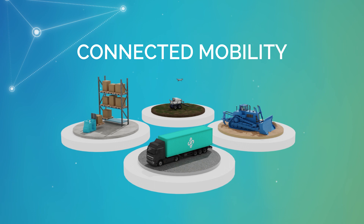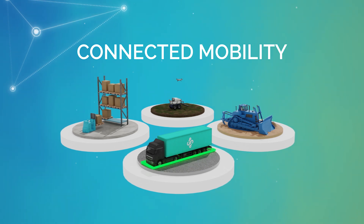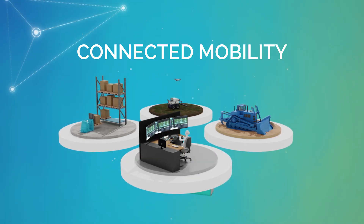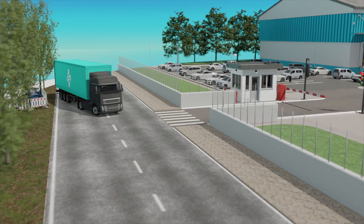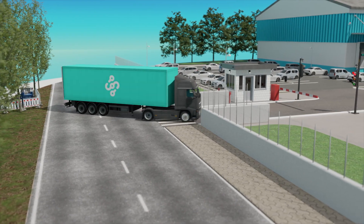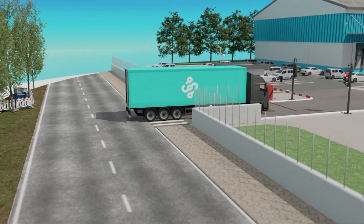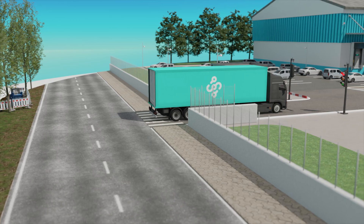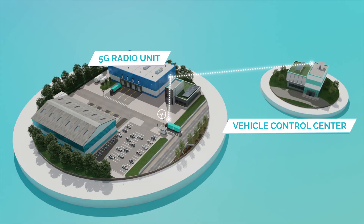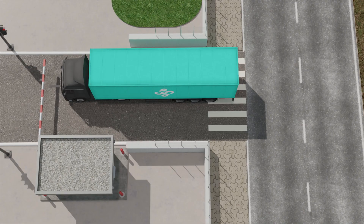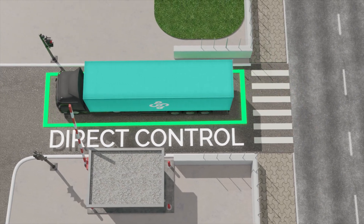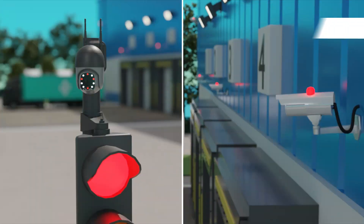Connected mobility use cases have strong requirements on the communication system to ensure safe operation via information exchange with other vehicles, the infrastructure and applications in the edge. In the teleoperation use case, an operator controls the vehicle remotely in order to drive it safely within the area, to manoeuvre it and/or to load or unload goods.